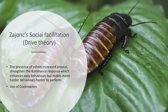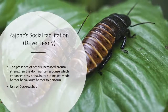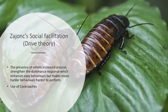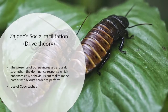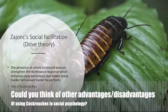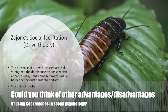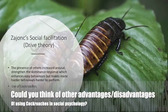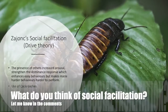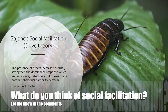Cockroaches were experimented on — since they weren't concerned about self-esteem — and it was found that cockroaches ran faster when others were present. Could you think of other advantages and disadvantages of using cockroaches to study social psychology? What do you think about social facilitation theory thus far?